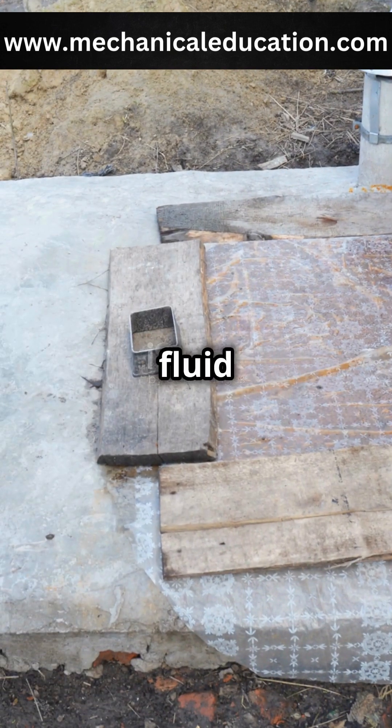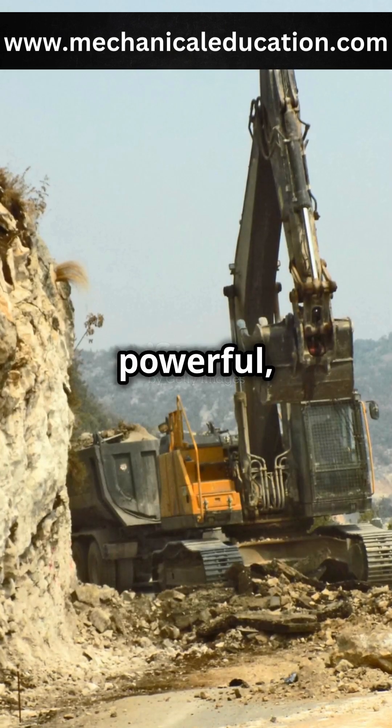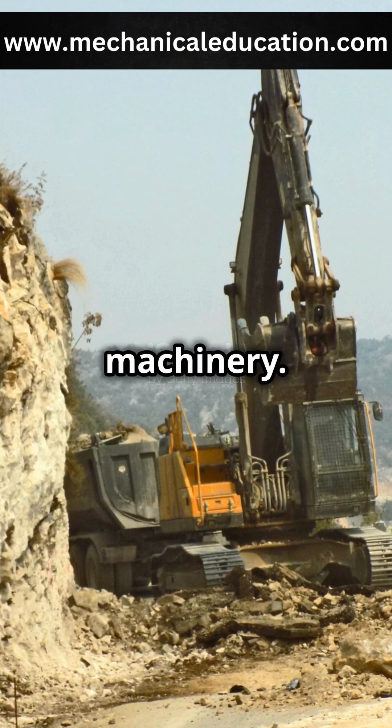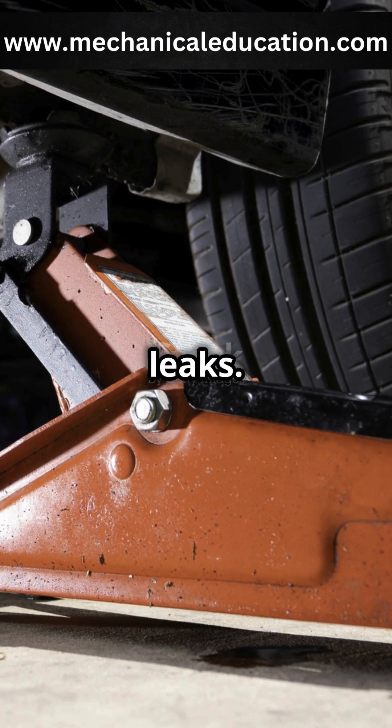Lastly, fluid links rely on the pressure of fluids like hydraulic oil to transmit motion. These are powerful, precise, and perfect for heavy machinery. But beware—fluid systems need regular maintenance and are prone to leaks.